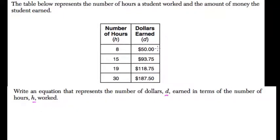I notice that when I go from 8 to 15, our slope is 43.75 over 7. It's the dollars earned, or delta Y, over the number of hours worked, delta X. This equals our slope.